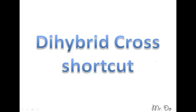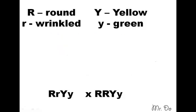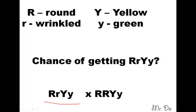In this video we have a dihybrid cross, and we're asked to find the chance of getting a specific genotype. The usual method is to first write out the whole dihybrid cross, get the genotypic ratio, and then find the chance of getting that genotype. If you do that method, it's going to take you at least 5 to 10 minutes. There is a shortcut way of doing it — it's a very simple rule.